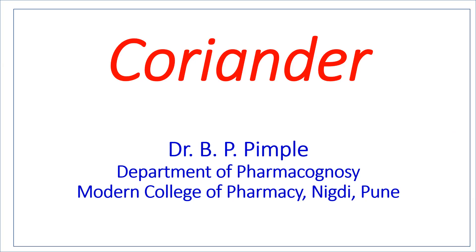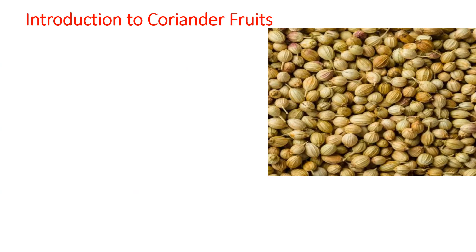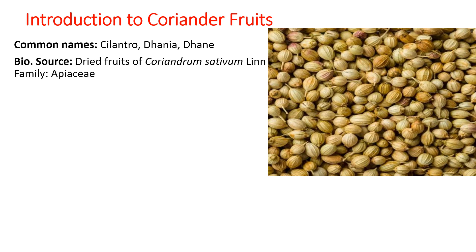Hello, myself Dr. Bhushan Wimpley. In this video we will discuss about the morphology and microscopy of coriander fruits. Coriander fruits are commonly called Dhania or Dhaniya, and in English it is well known as cilantro, especially in America.